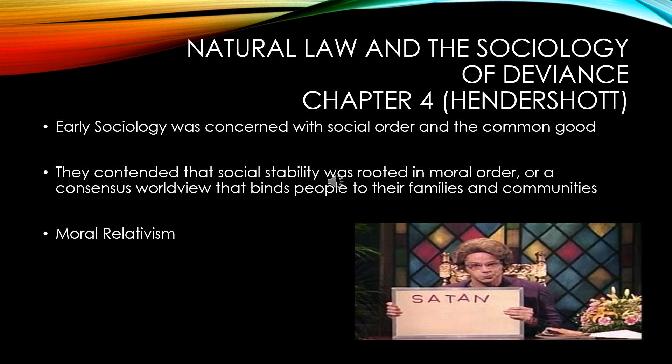Now we're going to look at Hendershot's reading entitled 'Natural Law and the Sociology of Deviance,' found in chapter four. This reading may be a little hard if you find yourself more of a constructionist or relativist in how you look at deviance. This reading analyzes deviance from a more absolutist model — a really black-and-white model where either a particular act is immoral or it's not. Hendershot thought this was really important in order to maintain the social order, based on religion and morality.